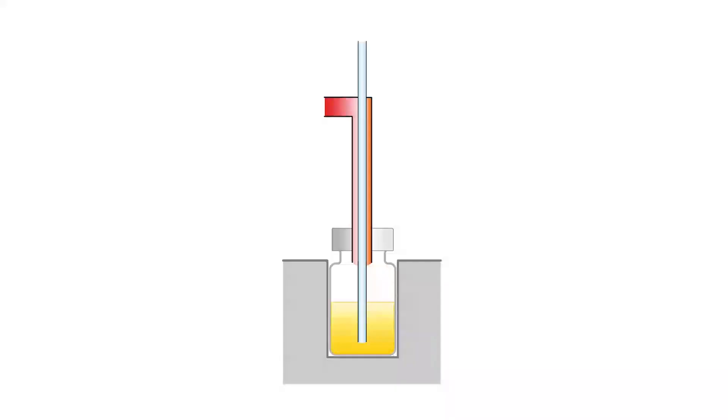What happens inside? The Carl Fischer oven heats the sample and the water contained in it evaporates. A stream of dry carrier gas transfers the water to the titration cell. There it is determined by coulometric Carl Fischer titration.